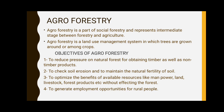Next objective is to optimize the benefits of available resources like manpower, land, livestock, and forest products without affecting the forest. This means making good use of human resources, land, water, and cattle for both forestry and agriculture, while taking care of the land and maintaining a proper landscape.